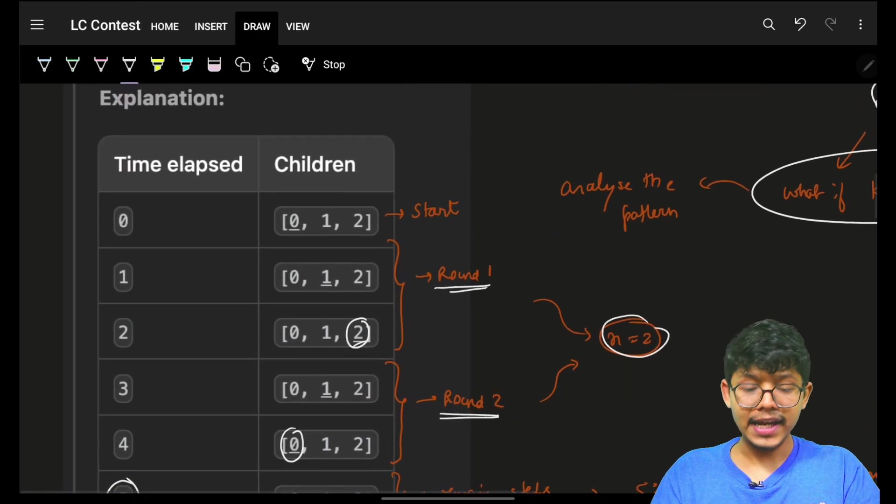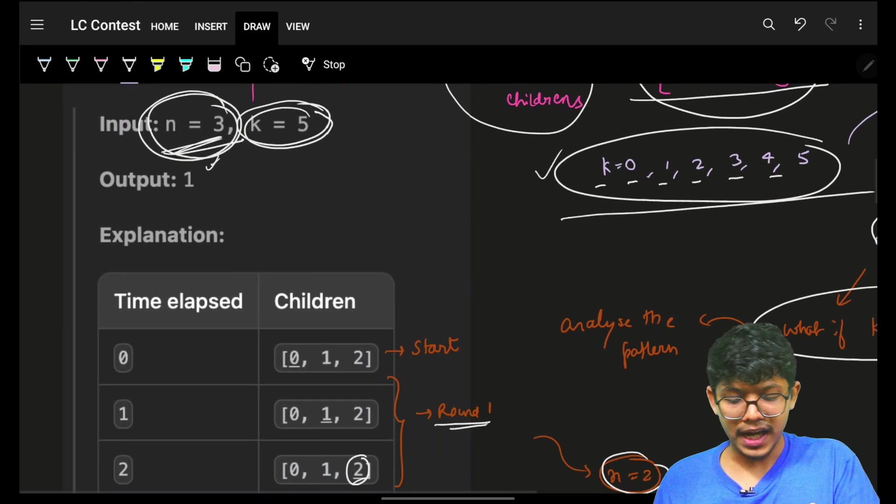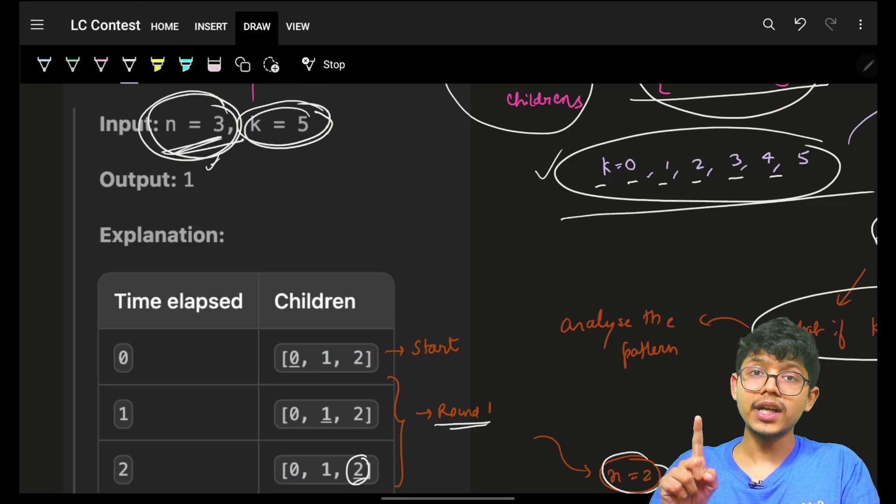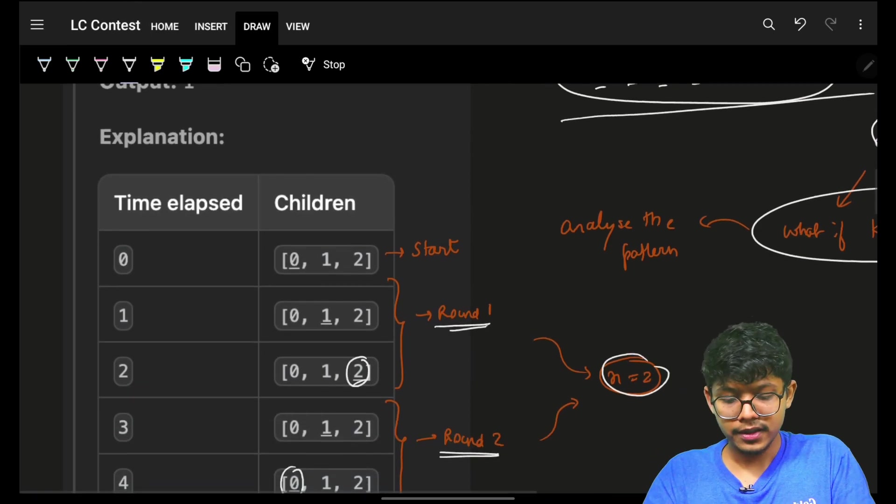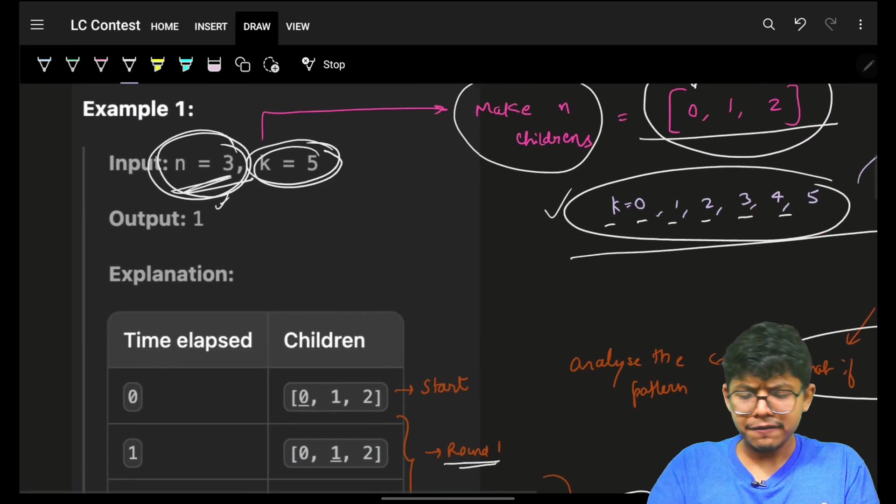Cool. And how I figured out this? By simply saying, okay, my end was 3. I had 3 children. So, 1 round will contain n minus 1. Sorry, I have 3 children. So, my 1 round will have n minus 1 number of seconds or iterations.